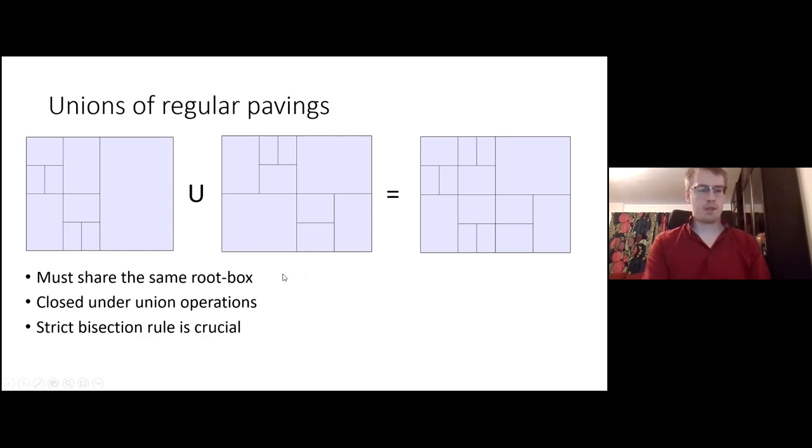How you do it, you could see it as superimposing the regular pavings on top of each other, or you take the most bisected parts of each regular paving. You could also think of it as a union between trees, then you would take the one with the parts with the most branches from each tree and you would get some union of them.